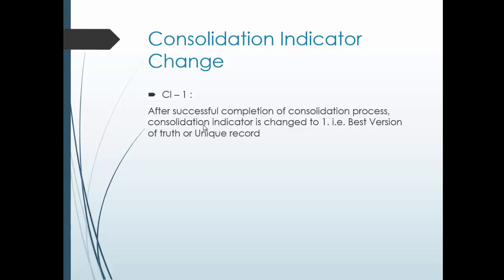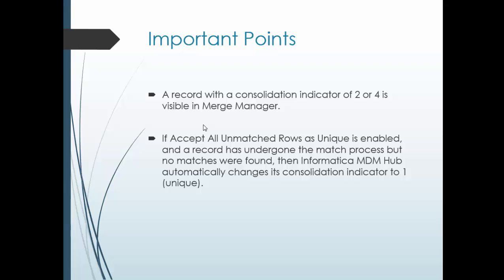Consolidation indicator value 1: after successful completion of the consolidation process, the consolidation indicator value changes to 1. We also call it the best version of truth, or unique record — also known as the golden record or consolidated record.